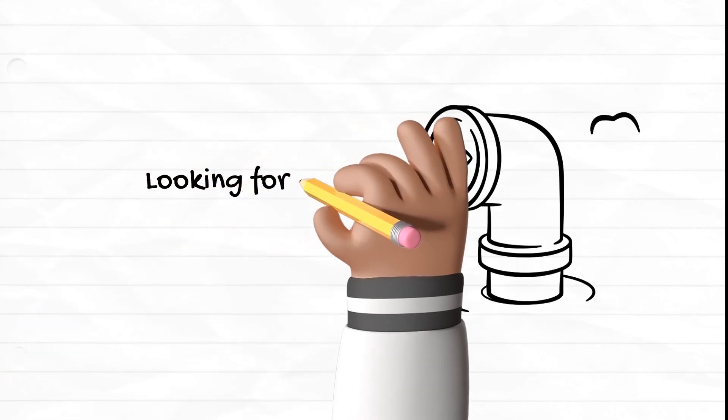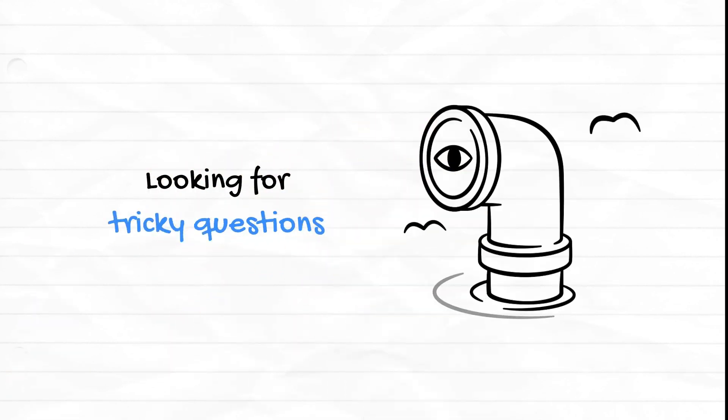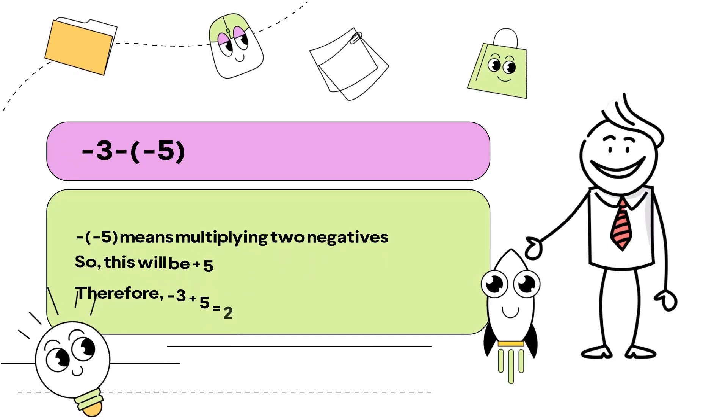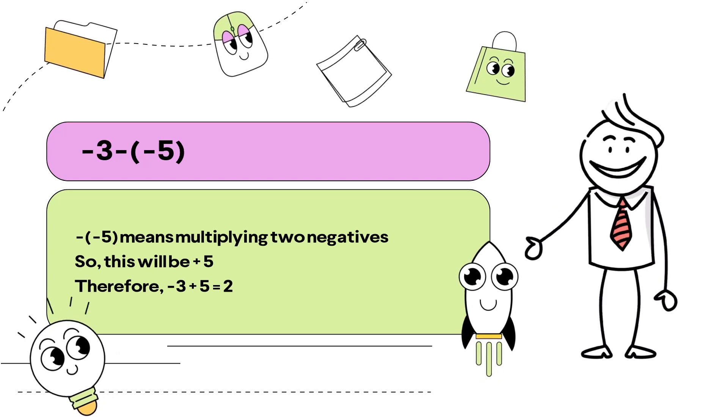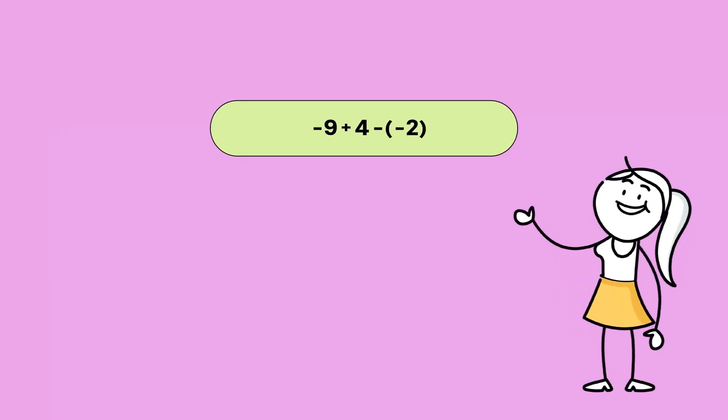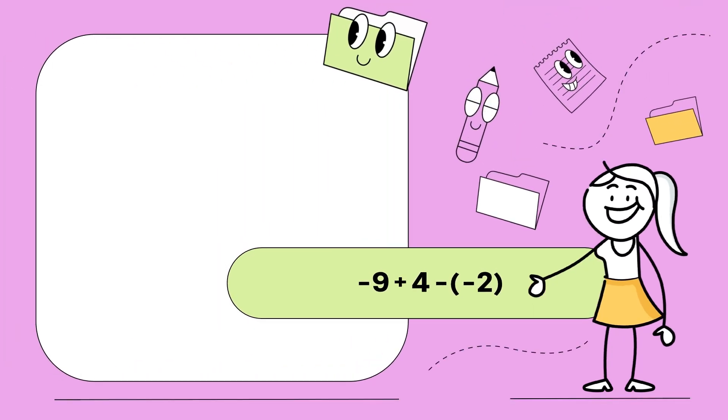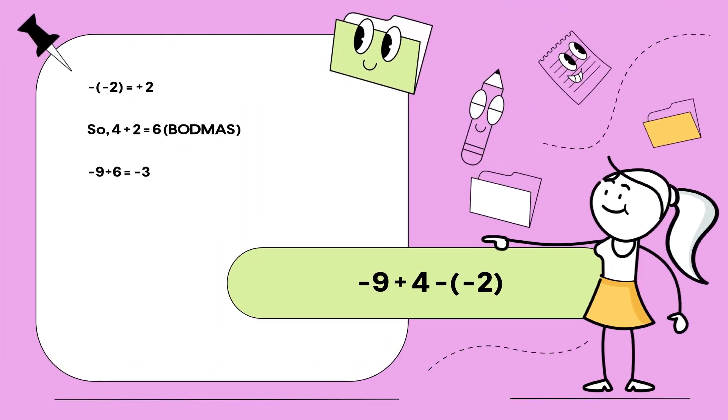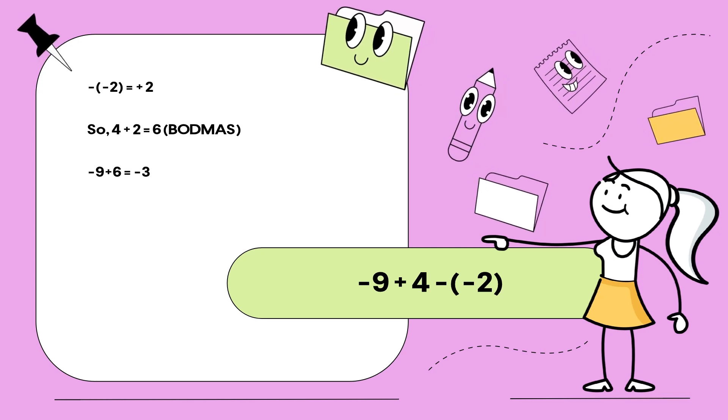Let's have a look at some tricky questions. Negative of negative 5 is positive 5. Negative 3 add 5 will give us 2. Negative of negative 2 is positive 2. Four add 2 is 6. Negative 9 add 6 will be negative 3.